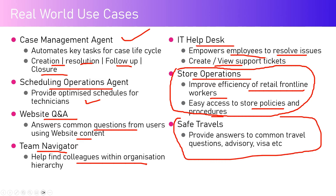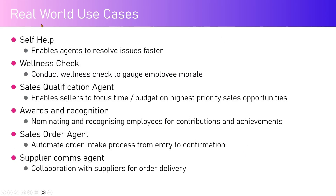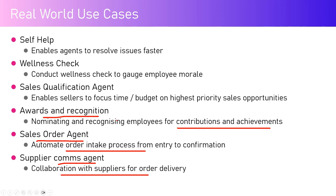A Safe Travel bot provides travel advisories, visa or ESTA information, safety guidance for flying to specific countries, and cultural information. A Self-Help Wellness Check agent enables users to resolve issues faster. A Sales Qualification agent helps qualify leads. An Awards and Recognition bot lets staff nominate and recognize employees for contributions and achievements. A Sales Order agent automates the order intake process from entry to confirmation, and a Supplier Communications agent manages collaboration with suppliers for order delivery.